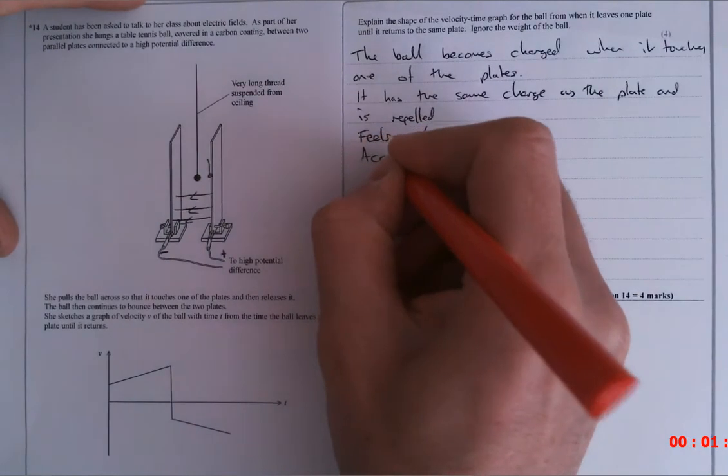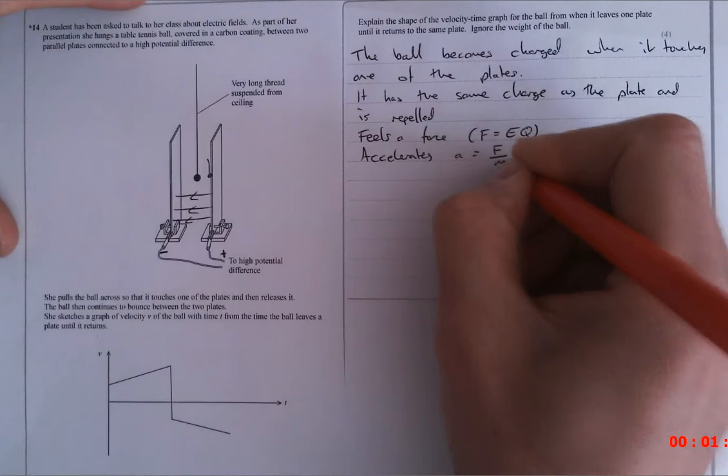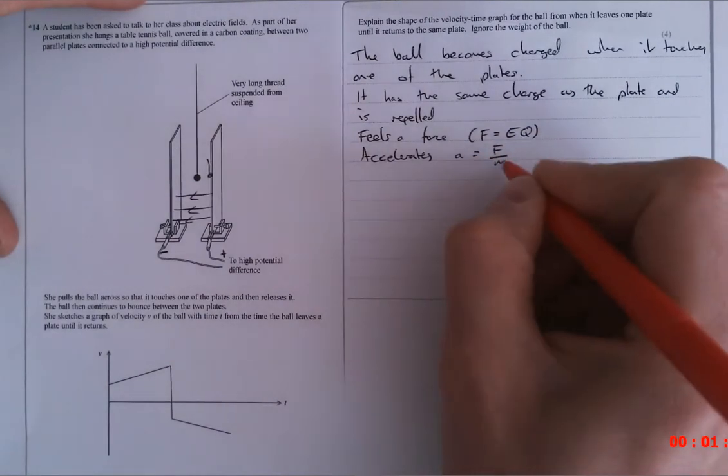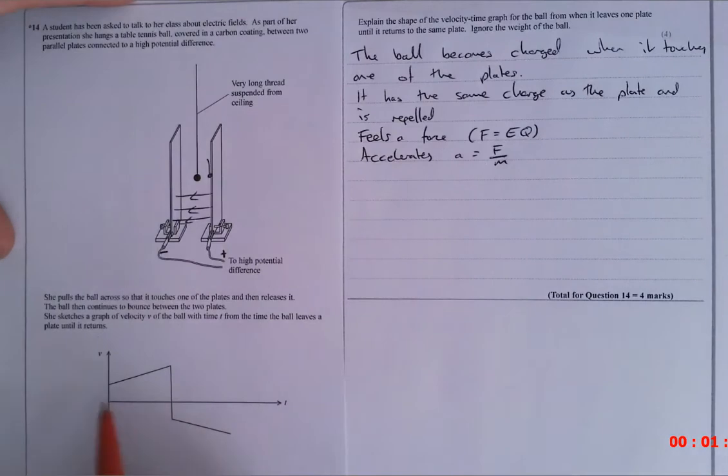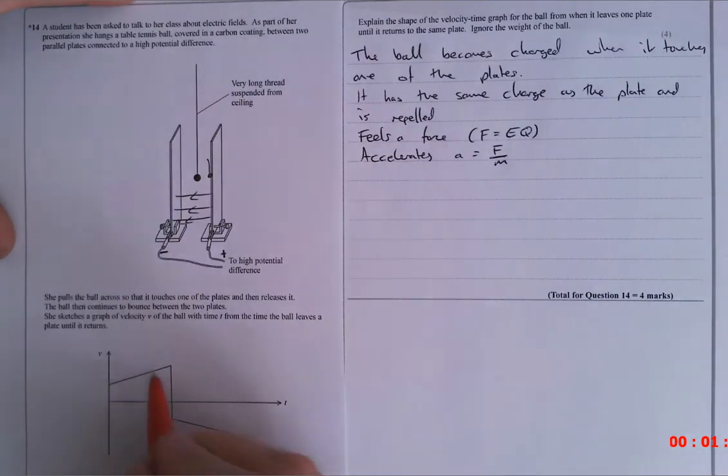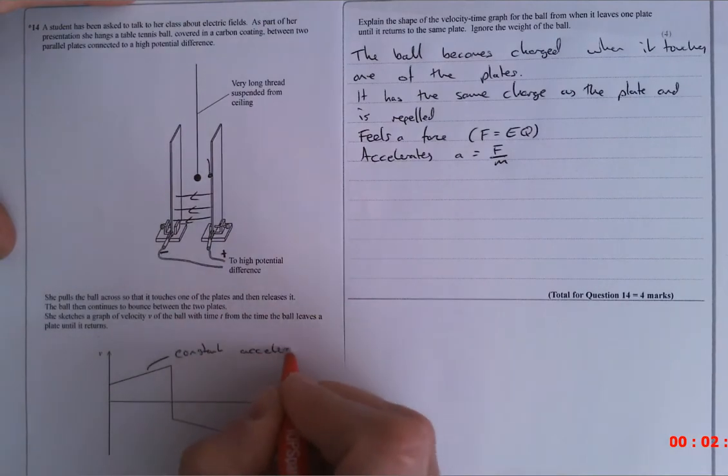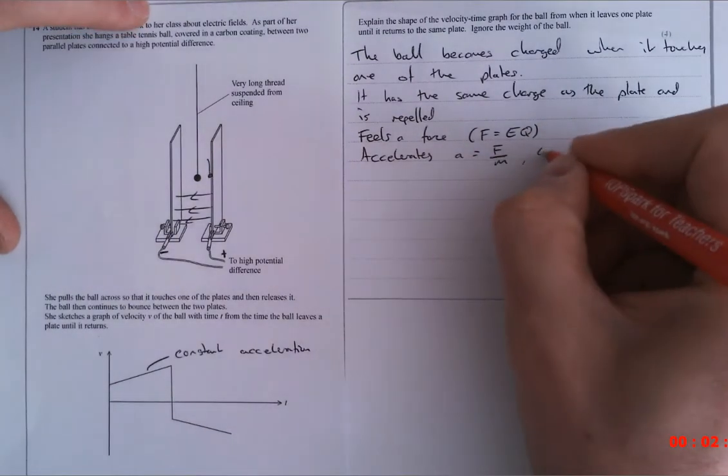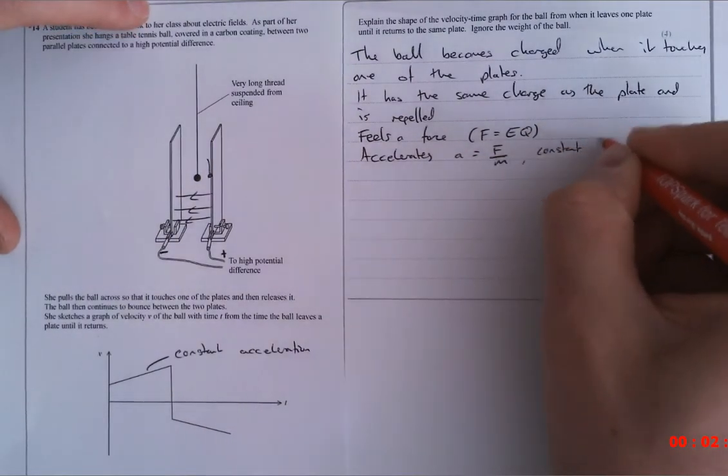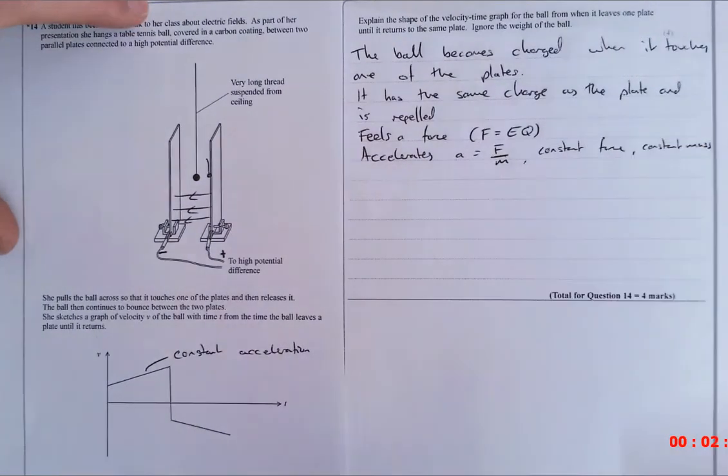Now it accelerates. And it accelerates because it has a force and it obviously has a mass. So it's given acceleration by this. Now at this point, we're going to refer to the graph. We have a constantly increasing velocity, which means this is a constant acceleration. So what is it important to say here? There is a constant force and obviously a constant mass as well. That is pretty obvious.